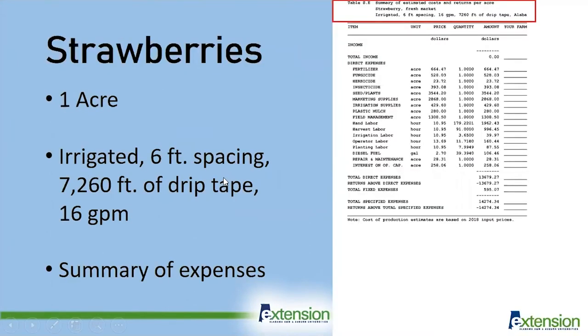The first page is a summary page and gives basic information. At the very top, it states the area, crop, and specifics of production. In this case, we're producing an acre of strawberries with 6 foot spacing, 7,260 feet of drip tape, and 16 gallons per minute of irrigation. All of these factors affect the total cost.